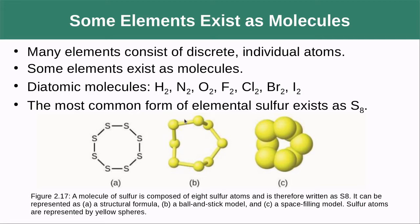Many elements consist of discrete individual atoms, but some like to form more complex structures. A lot of the classic ones are diatomic. You're rarely going to find a loose hydrogen atom — you'll always find H2, N2, O2, F2, chlorine, bromine, and iodine. These always want to find another atom nearby and pair off.